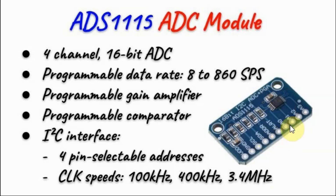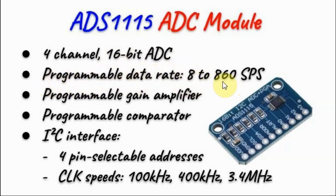The analog-to-digital converter module has the IC ADS1115, which is a 4-channel 16-bit analog-to-digital converter. It has a programmable data rate from 8 to 860 samples per second, a built-in programmable gain amplifier, a programmable comparator, and an I2C interface with 4-pin selectable addresses.